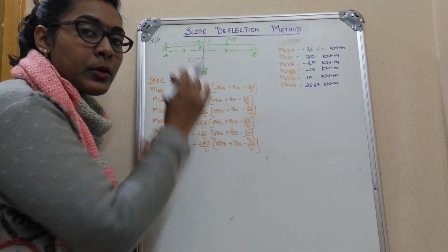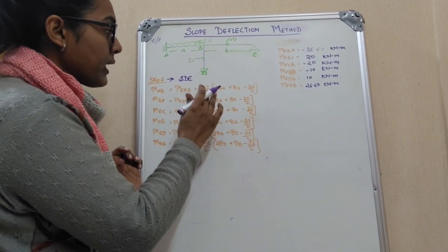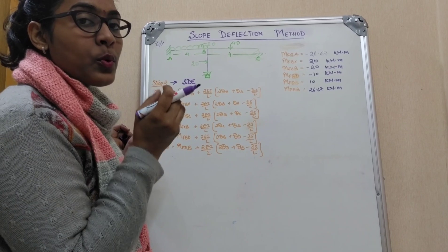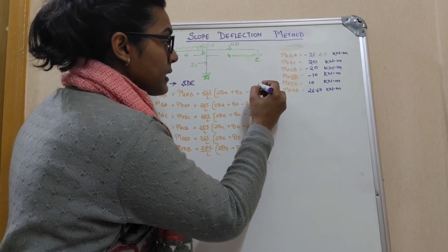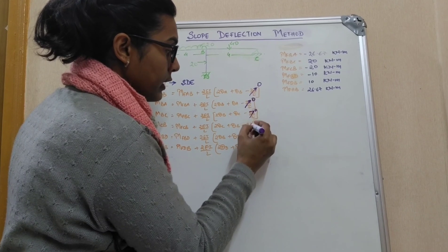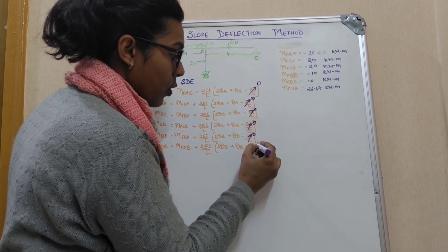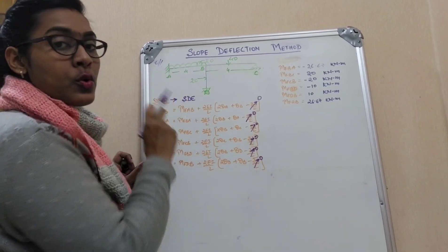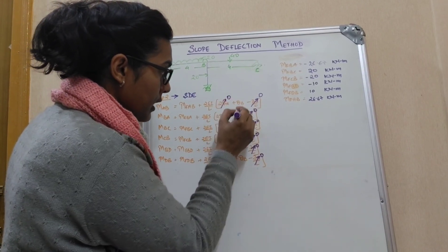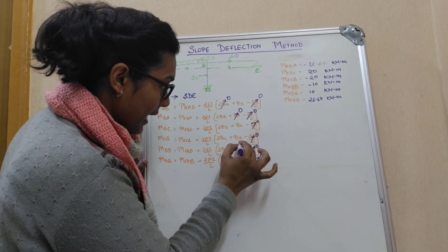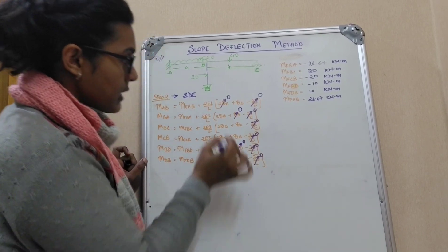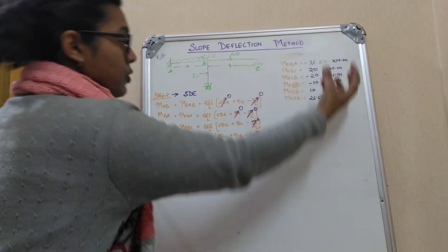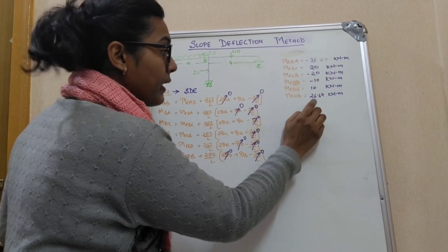At the fixed ends your slopes are zero. In this problem no support is sinking, so the sinking term is zero in all equations. Supports A and D are fixed, so theta_A and theta_D are both zero — wherever we find theta_A or theta_D we simply put zero.